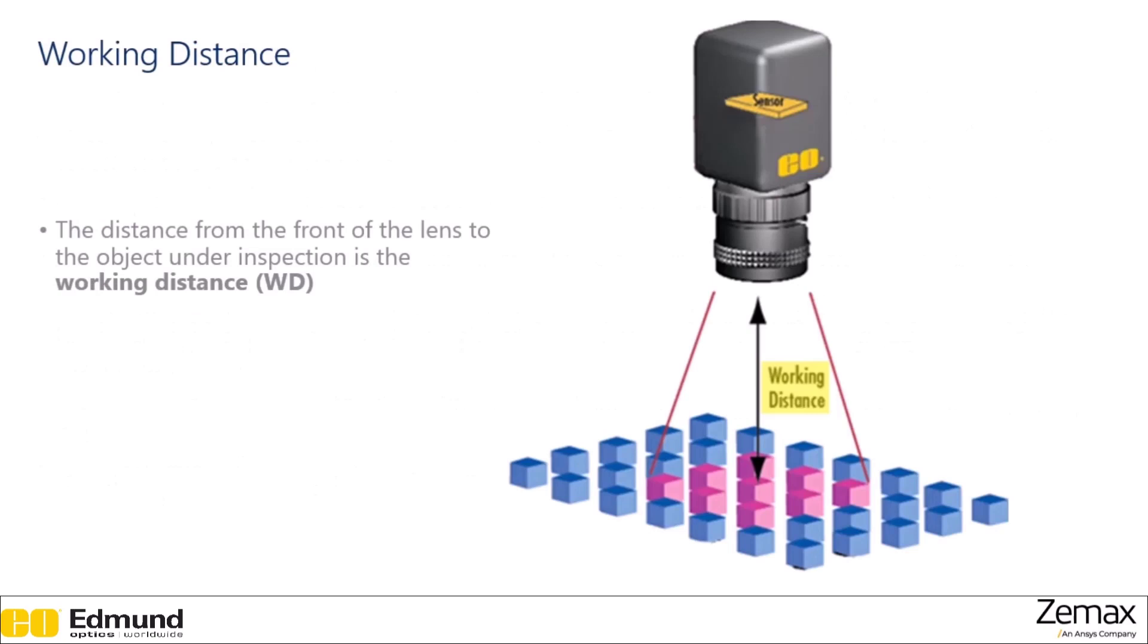So jumping right in, working distance is the distance from the lens to the object underneath or inspection. Some systems, such as microscopes, are designed to work at a specific working distance, so your object will always be the same distance from the lens, whereas other systems, such as a traditional photography camera, are designed to be adjustable so you can use it at many different working distances.